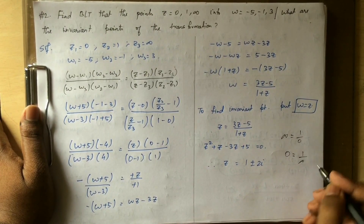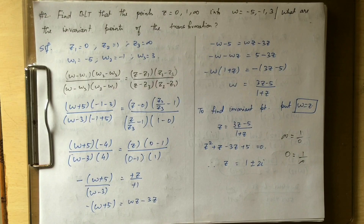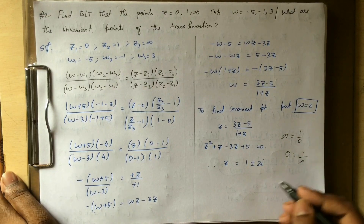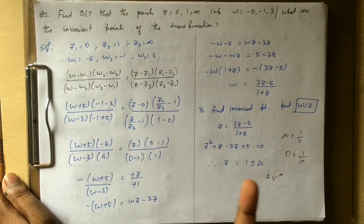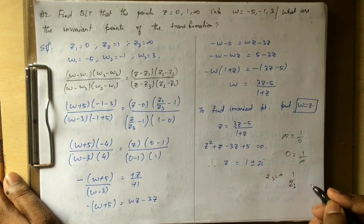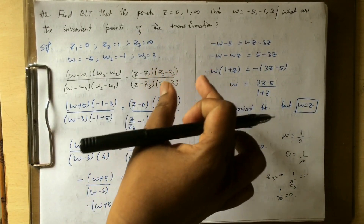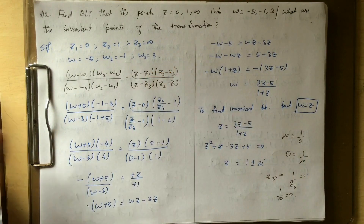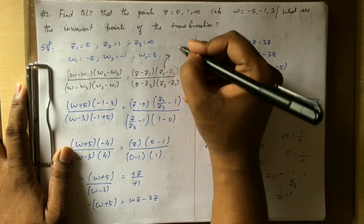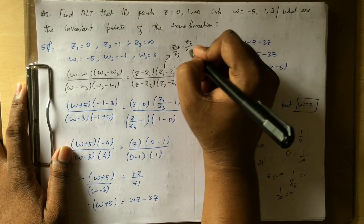When simplifying, 1 by infinity equals 0. So z3 divided by z3 gives 1, and 2 divided by z3 gives 0. We use this to simplify the cross-ratio formula when z3 approaches infinity.